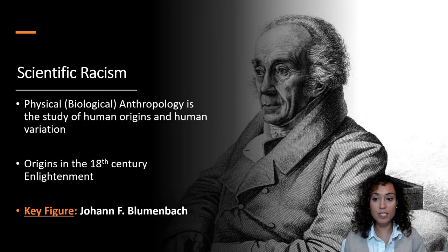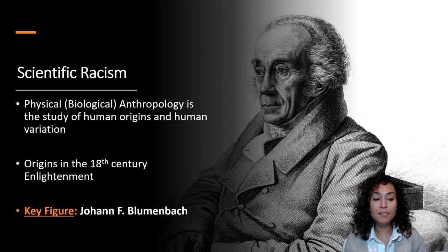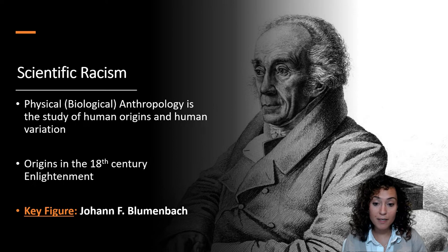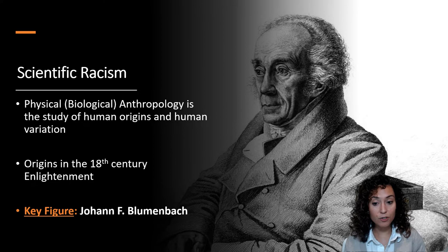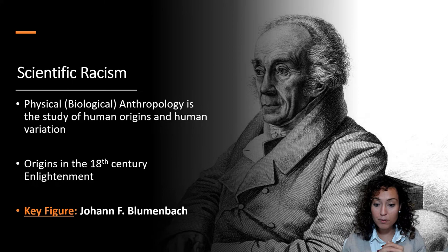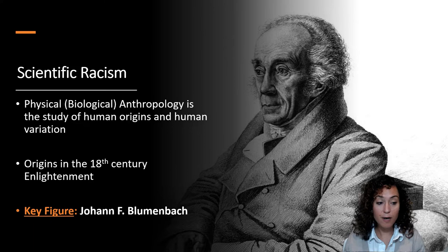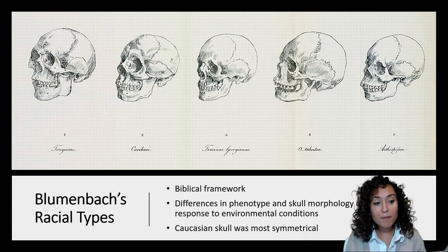The fundamental subject of physical or biological anthropology is the exploration of human origins and human variation. Professional writings on these topics began in the 18th century, which is also when the concept of race was formalized. Johann Friedrich Blumenbach, a German physician and anatomist, developed a five-fold classification system of human varieties including American, Asian, African, European, and what he termed Malay. Blumenbach's classification became the foundation of all subsequent anthropological theory around human evolution, and he is widely considered the founder of physical anthropology.